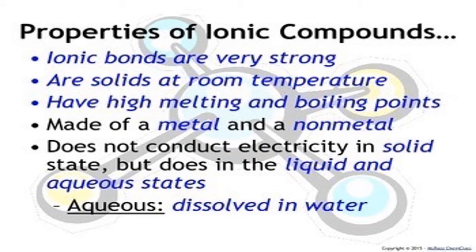Today we are going to discuss some selected properties of ionic compounds. Ionic bonds are very strong because they are formed by the electrostatic force of attraction. Ionic compounds are solids at room temperature. Recalling from earlier grades, the three states of matter differ in the arrangement of particles. In the solid state, particles are closely packed, and in ionic compounds, due to the opposing charges, they go for strong close packing — so they naturally occur as solids at room temperature.